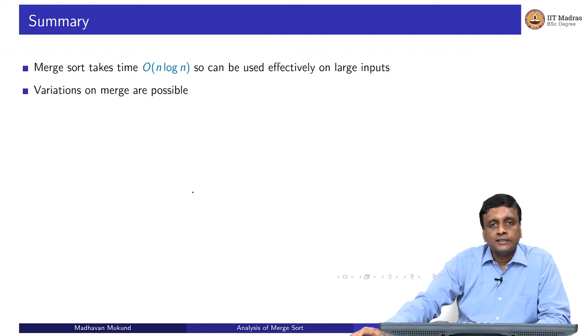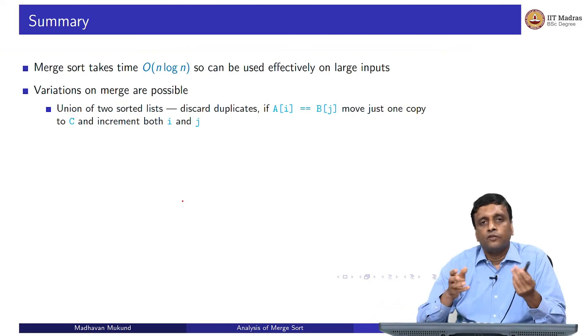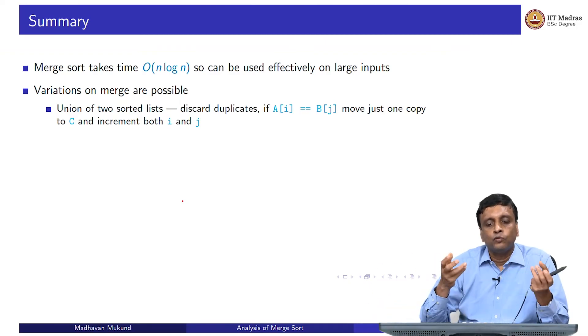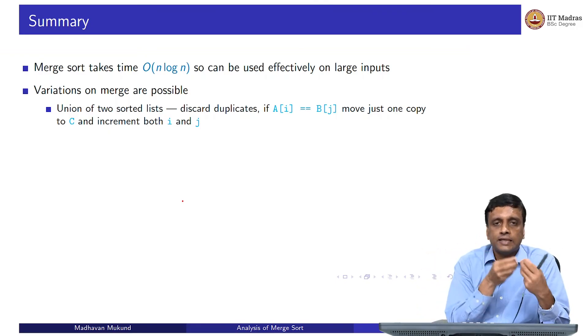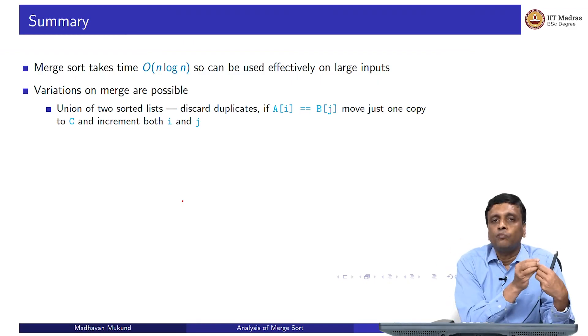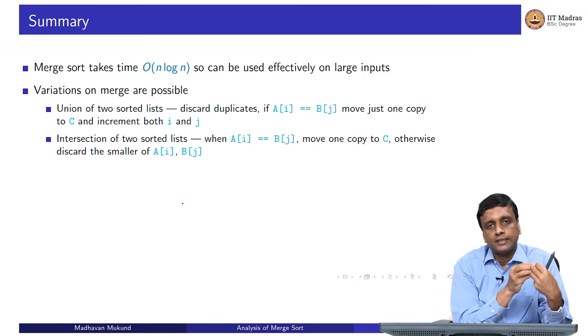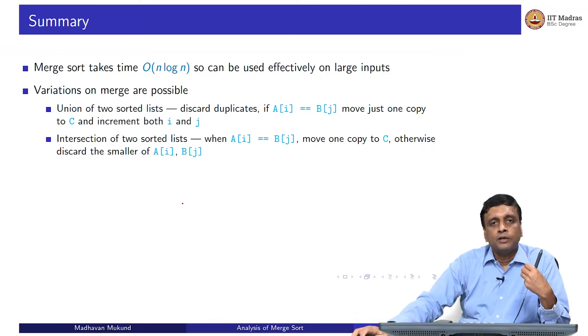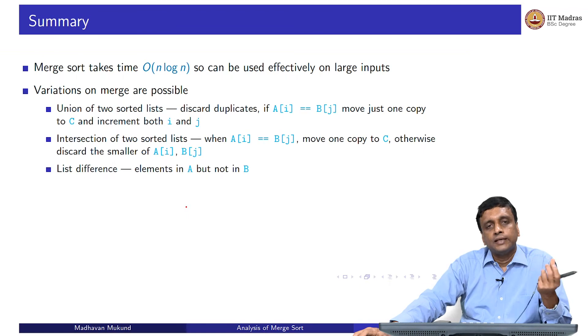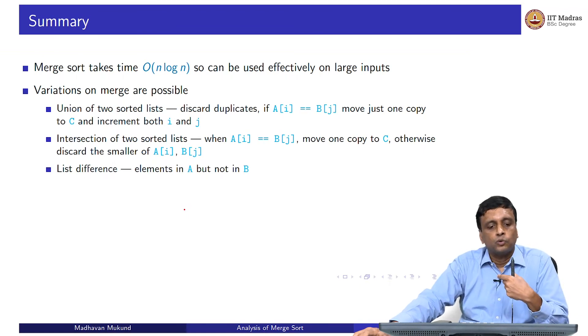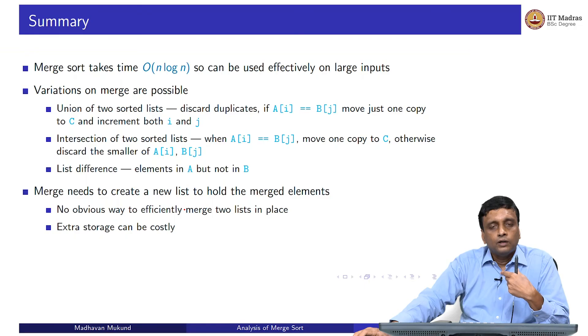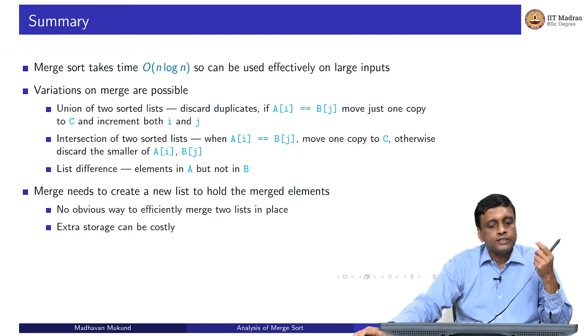Another thing is that that merge function that we saw here actually can be used in a number of contexts. One thing is if you take two lists of values without duplicates, you can take the union and remove duplicates. Basically, whenever I move from A and B to C, if I see the same value at A[i] and B[j], I keep only one copy, but I move both the pointers. Similarly, you can do intersection - if I see the same value, I move it; if I do not see the same value, I skip it. So the same merge function, there are lots of variations, and they can do very interesting things with two sorted lists. You can also do the list difference - everything which is in A but which is not in B, and so on.